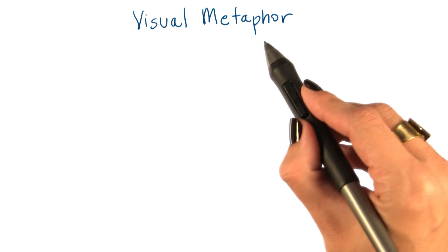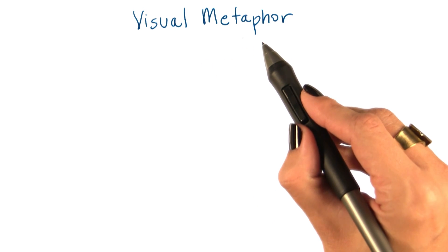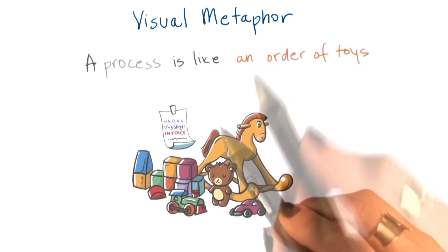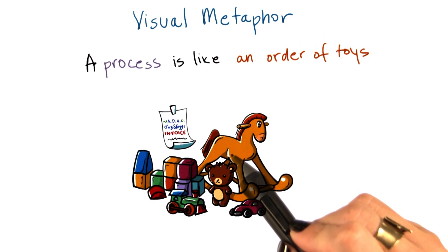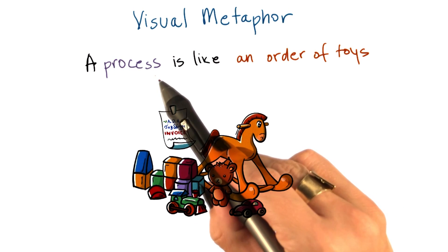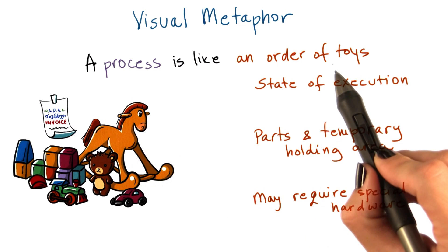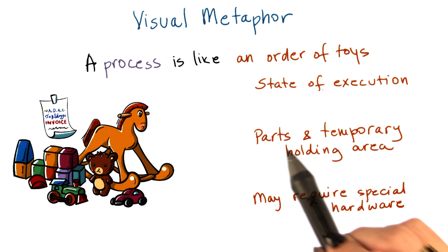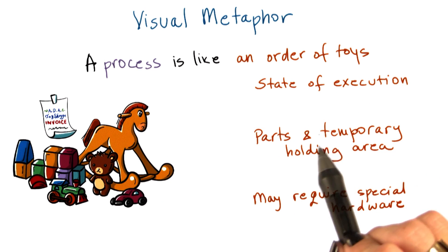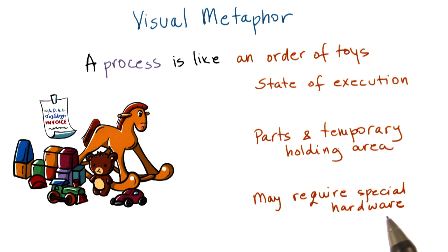We will use again a visual metaphor to describe what a process is. Continuing with the toy shop as an example, you can think of a process as an order of toys. An order of toys has its state of execution, requires some parts and a temporary holding area, and may even require some special hardware.